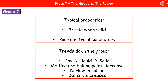We need to know the typical properties of halogens. When solid, they're brittle, meaning they break quite easily, and they're poor electrical conductors. We also need to know the key trends as we go down the group: they go from gas to liquid to solid, they get darker in colour, and their melting points, boiling points, and density all increase.